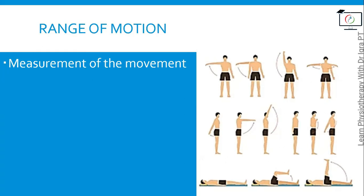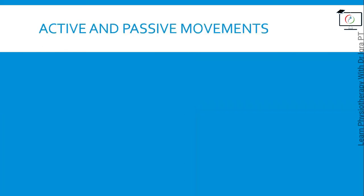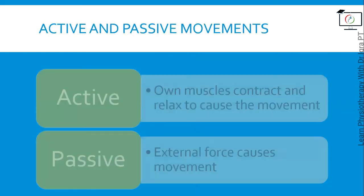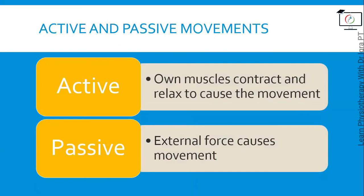Active movement is movement you can do by your own will, by the help of your muscles — when your muscles contract and relax they cause movement. When that physiological movement is done by some external force, for example a physical therapist moving your head or your leg through a range of motion, it is known as passive range of motion or passive movement.